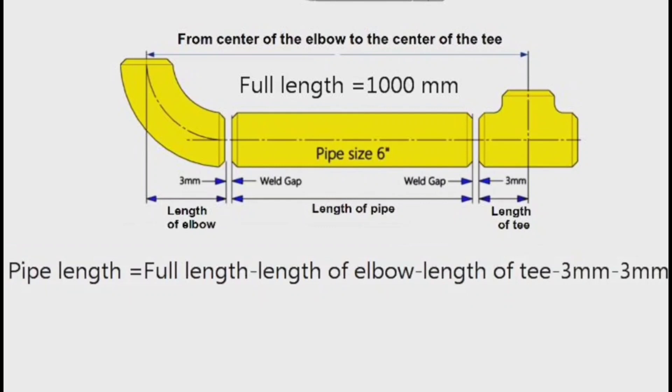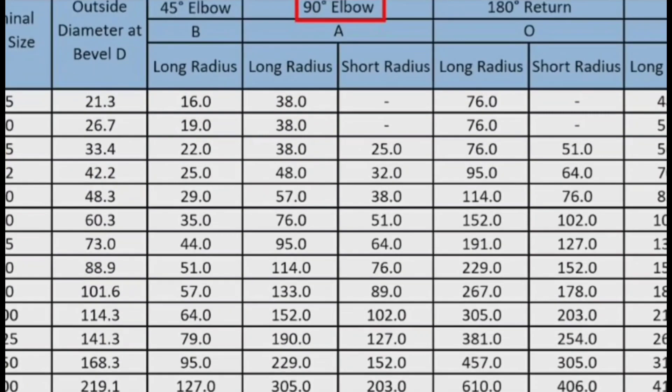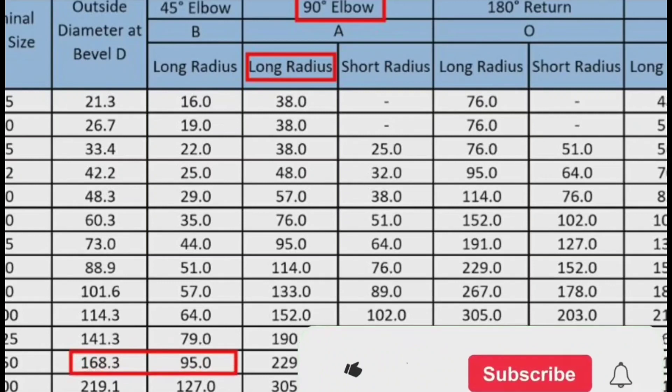Now we will write and calculate the dimensions of the pipe fittings in this pipeline from their standard tables. First, looking at the elbow's dimension table, we find that the length of a 90-degree 6-inch elbow is 229mm.